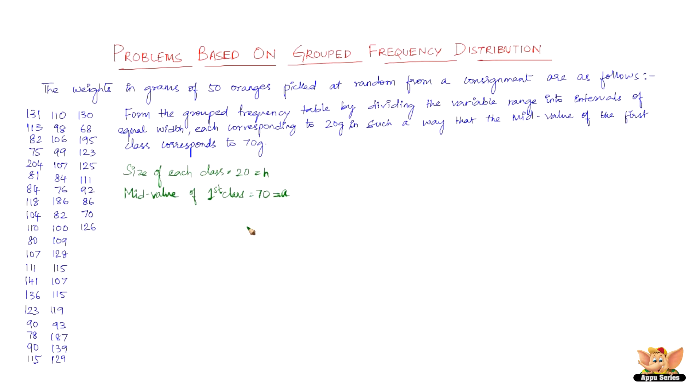How do you find the lower and upper limits? The lower limit is a minus h/2, and the upper limit is a plus h/2. So here, we have 70 minus 20/2 for the lower limit, and 70 plus 20/2 for the upper limit. The lower limit is 70 minus 10 equals 60, and the upper limit is 70 plus 10 equals 80.